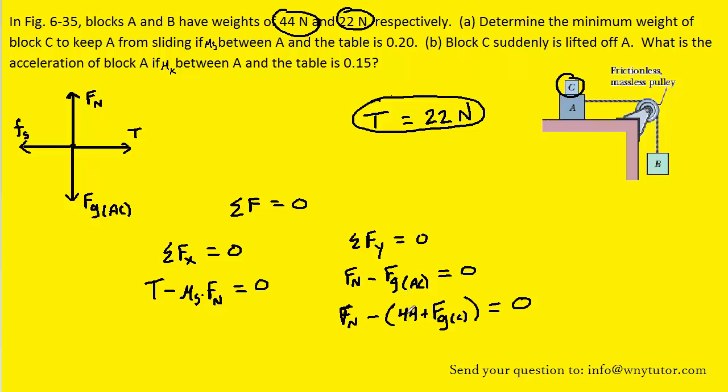Again, we have the 44 Newtons contributed by block A, and then the unknown number of Newtons contributed by block C, which we've indicated as F sub GC. We can actually add this term over to the other side and solve for the normal force.